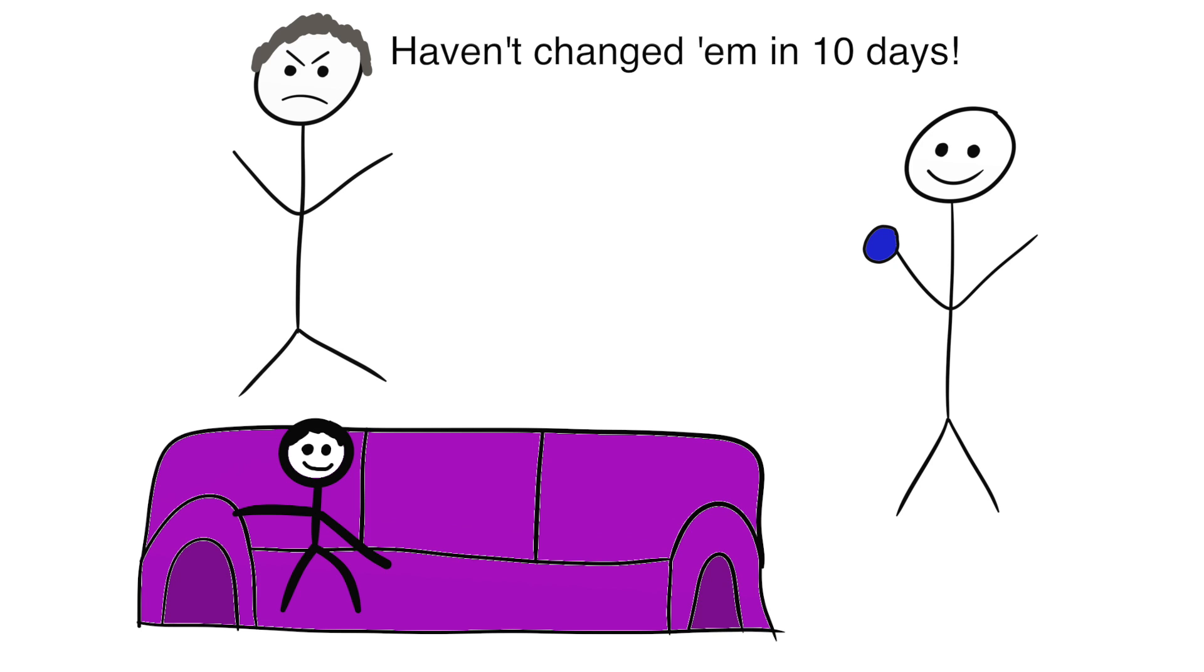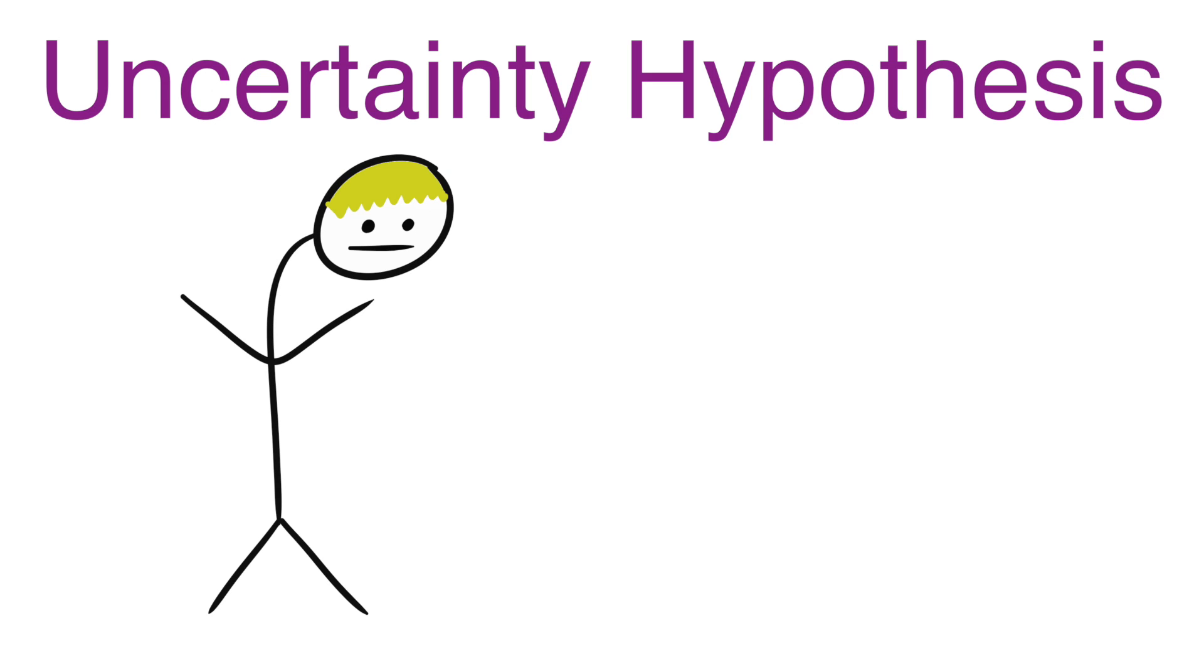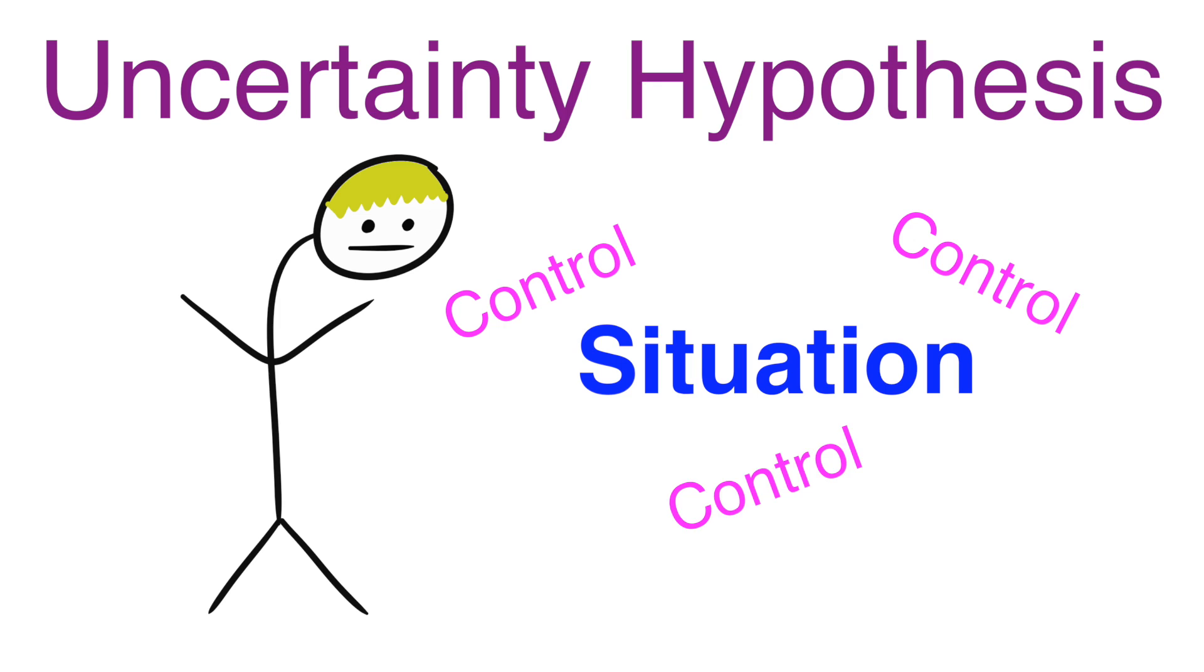Some researchers believe that despite human tendencies to fall for false causal relationships and superstitions, they know how ridiculous their beliefs are. These researchers believe that the uncertainty hypothesis plays a role in our superstitions. The uncertainty hypothesis states that when people lack control over a situation, they tend to try to find ways to control it.